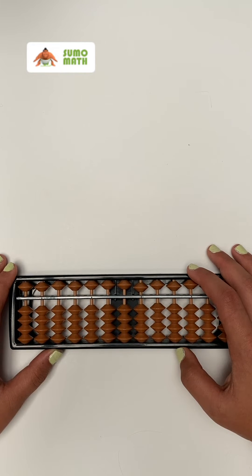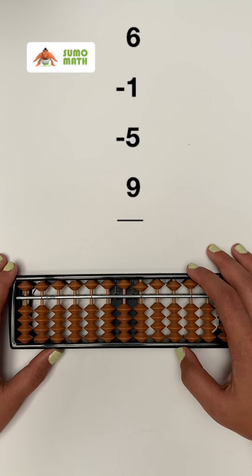Like we promised, sumo math is pretty simple. Let's try the problem six minus one minus five plus nine.